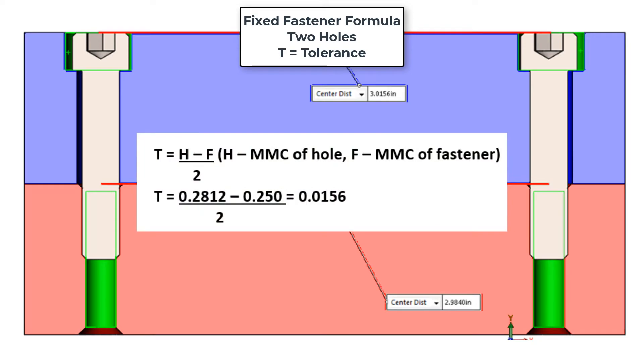In this case, the positional tolerance for both the clearance and the threaded hole will be H minus F divided by 2. For this example, the positional tolerance would be 15 and a half thou.